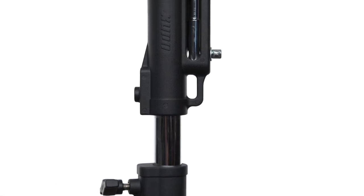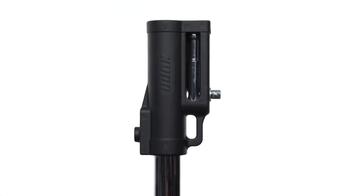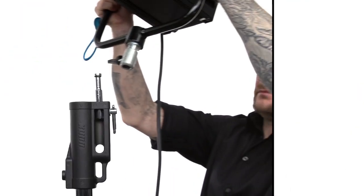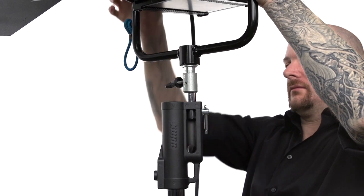This head features a retractable baby pin that can be pushed up from its storage location. Simply loosen both set screws, slide the pin up, and lock it down. Now you're ready to mount your light fixture.